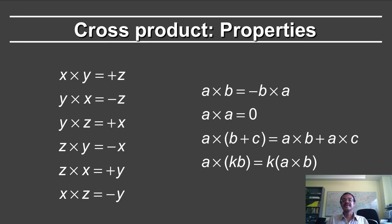You can visualize the x, y, and z axes, and by using the right hand rule, you can yourself verify that these formulae are true. The x cross y is equal to z, y cross z is equal to x, and z cross x is equal to y.